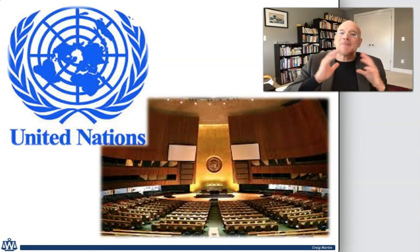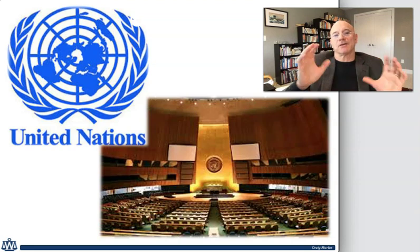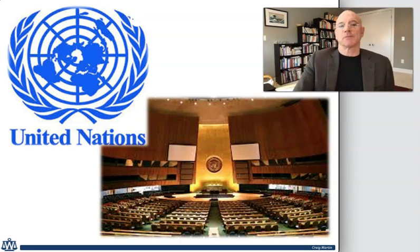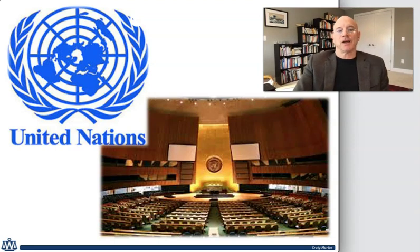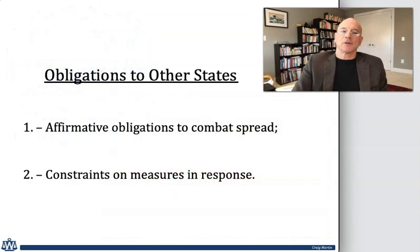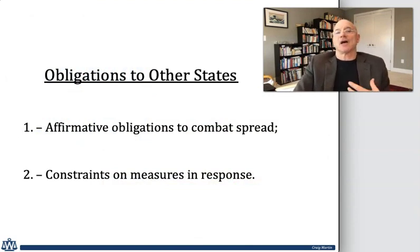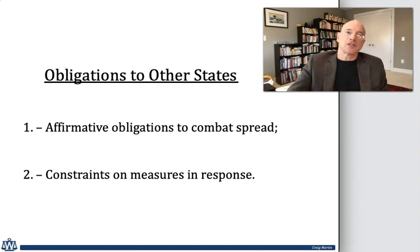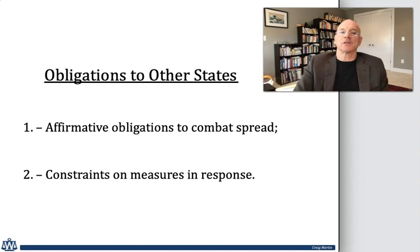There are many aspects of public international law that are implicated in all sorts of different ways, but in this short segment I'm going to touch on just a couple of them. To begin with, I'm going to look at the obligations that states have to other states in how they respond to a pandemic. This includes both the obligations to prevent the spread of the disease and the constraints imposed on states in how far they can go in responding to the pandemic.